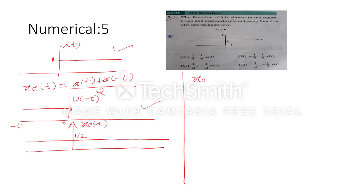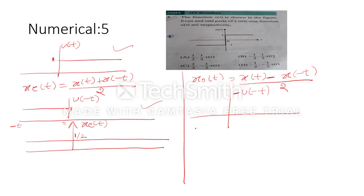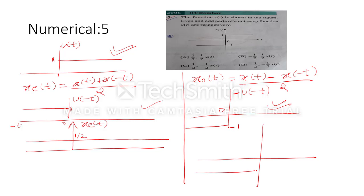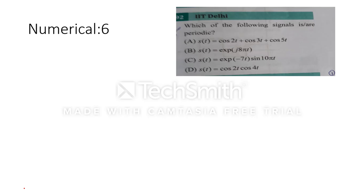For the odd part, the formula is [x(t) − x(−t)]/2. Subtracting u(−t) from u(t): for t < 0, (0 − 1)/2 = −1/2, and for t > 0, (1 − 0)/2 = +1/2. So the odd part has magnitude ±1/2. Checking option A: the even part is a DC signal of magnitude 1/2 and the odd part has magnitude 1/2. Option A is correct.